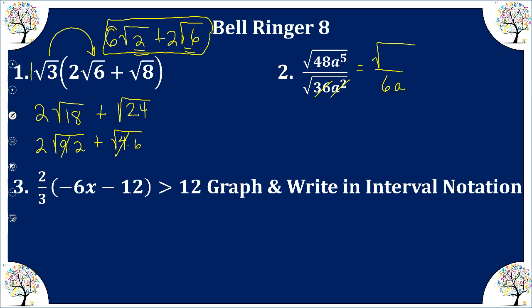48 can be broken down into 16 times 3. a to the 5th can be broken down into a squared times a squared times a. I take the square root of 16, this gives me 4. The square root of a squared and a squared, that's going to give me a squared. Radical 3a over 6a.